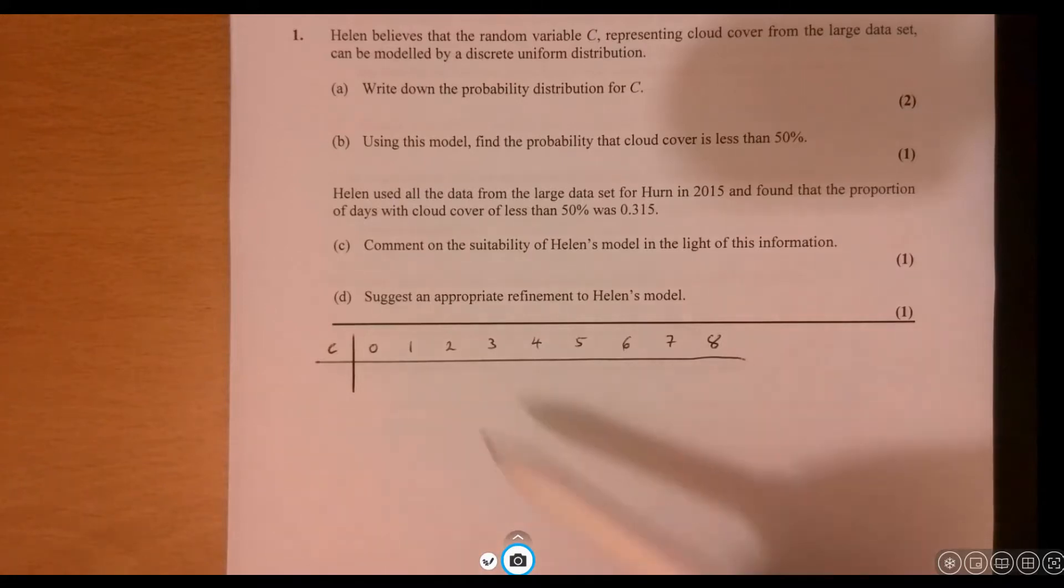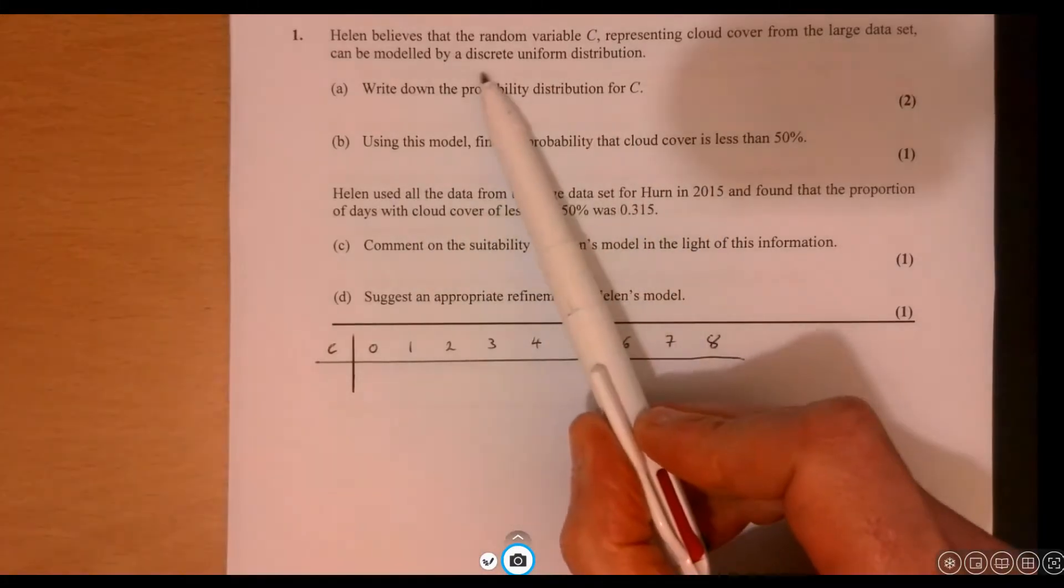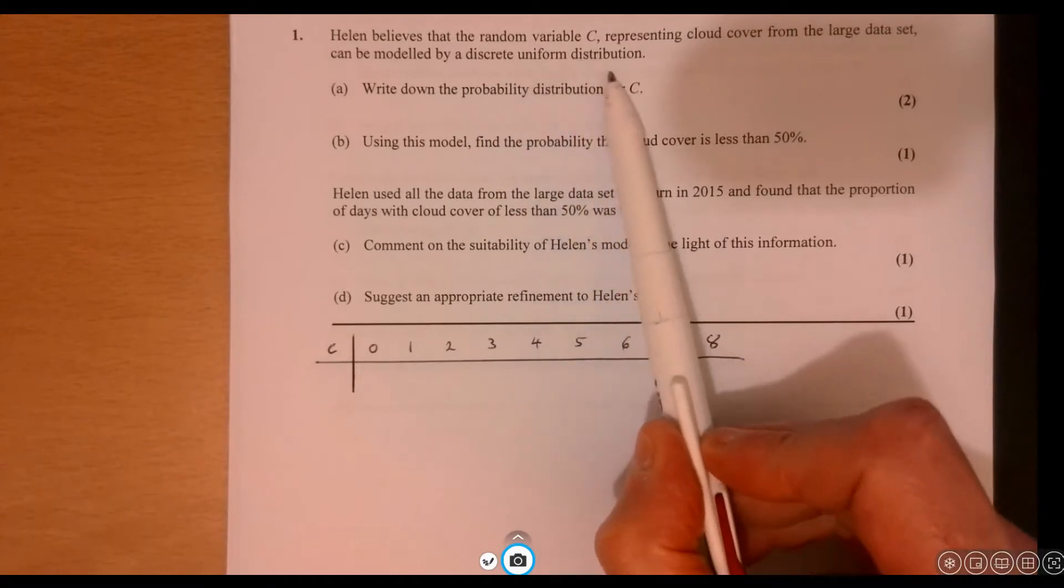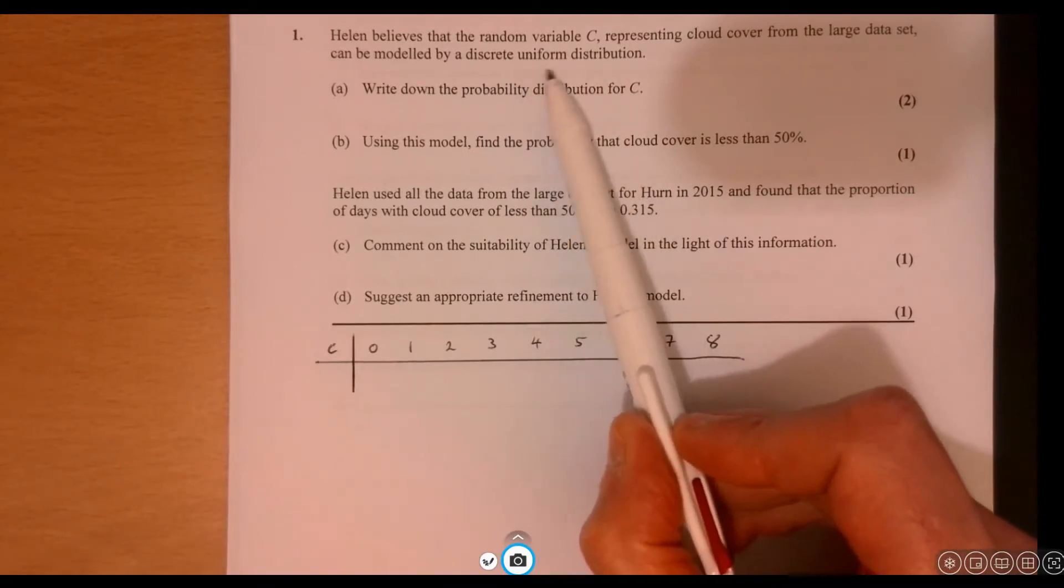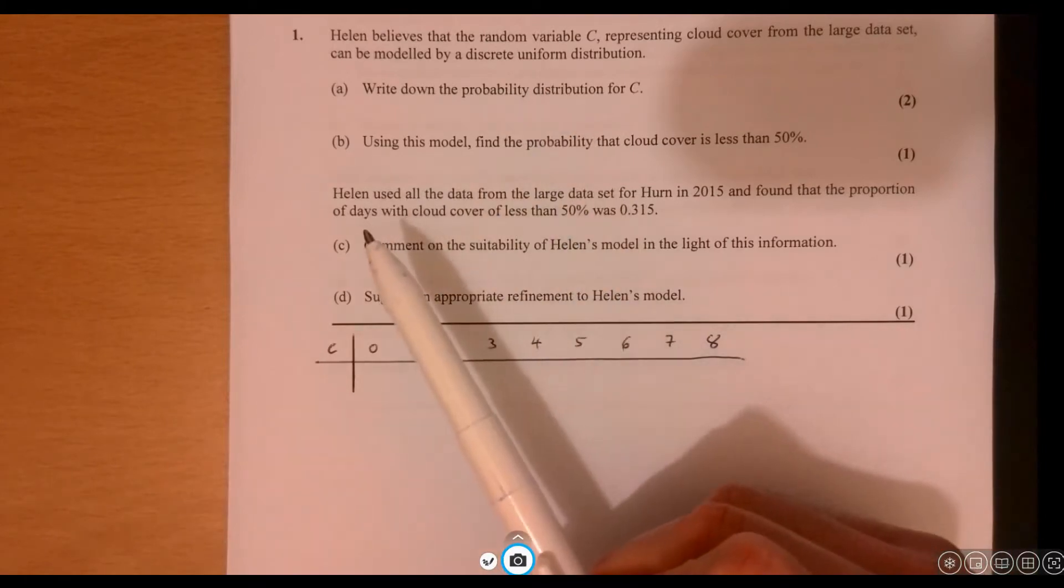Question 1. Well, for the first part, it does tell us it's a discrete uniform distribution. So that should be a pretty big clue. Uniform means the probability stays the same.